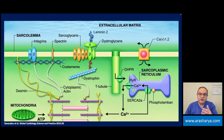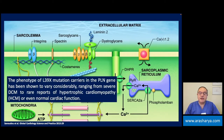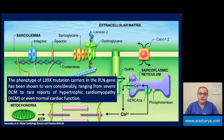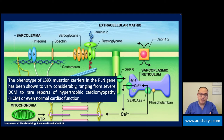In patients who have such a mutation in the phospholamban gene, we have a range of different kinds of presentations. The most important presentation is dilated cardiomyopathy with ventricular arrhythmia. There are some rare cases of hypertrophic cardiomyopathy related to this mutation, and in very rare cases — like in our patient — we have normal cardiac size and function but frequent PVCs which lead to ventricular fibrillation.